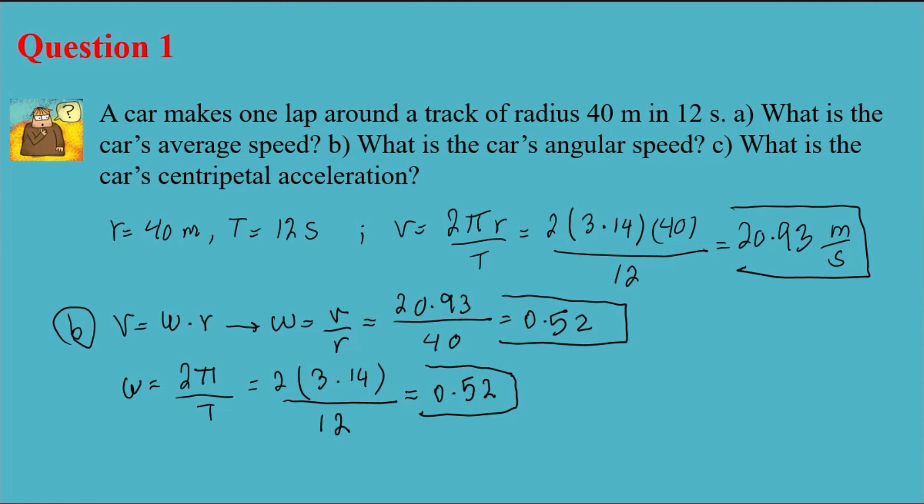The advantage of using this equation, 2π over T, over the other equation, V over R, is if you make a mistake in part A and your answer is wrong, it doesn't affect part B.